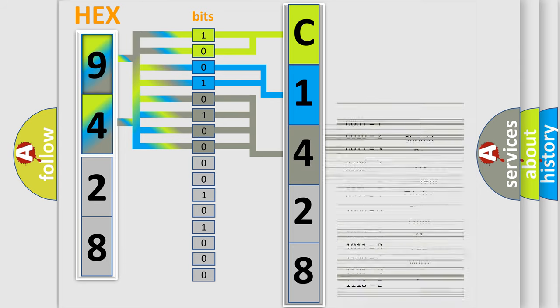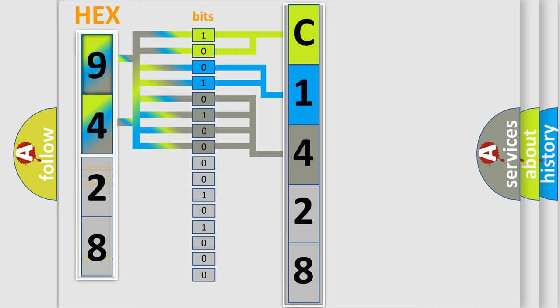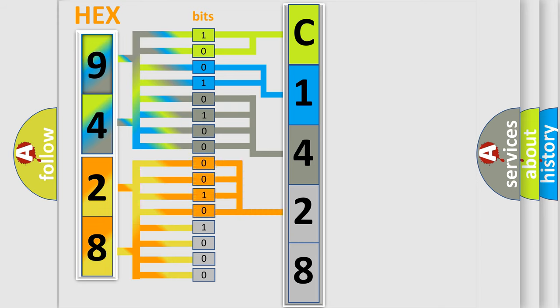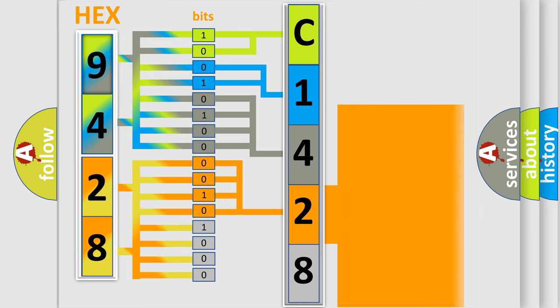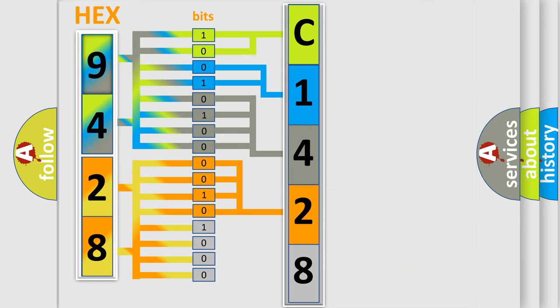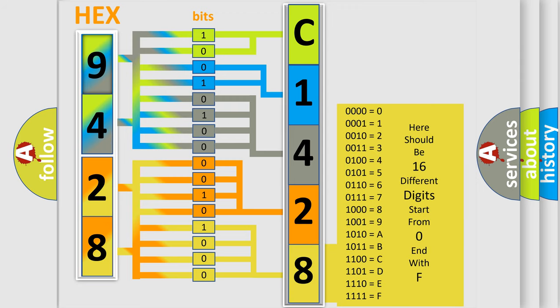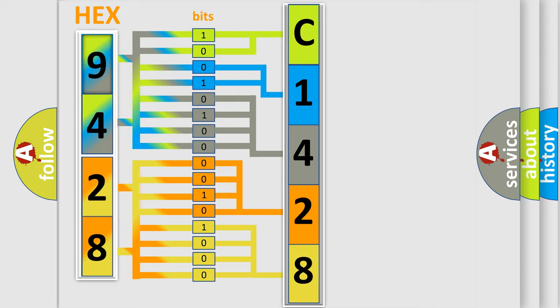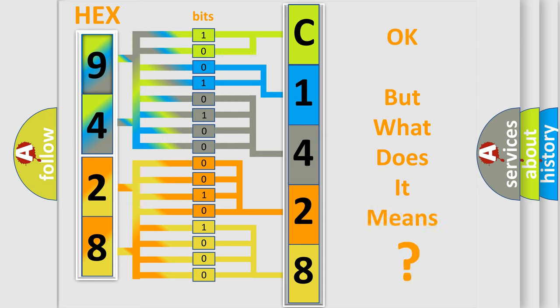The second byte is composed of a combination of eight bits. The first four bits determine the fourth character of the code, and the combination of the last four bits defines the fifth character. A single byte conceals 256 possible combinations. We now know in what way the diagnostic tool translates the received information into a more comprehensible format.